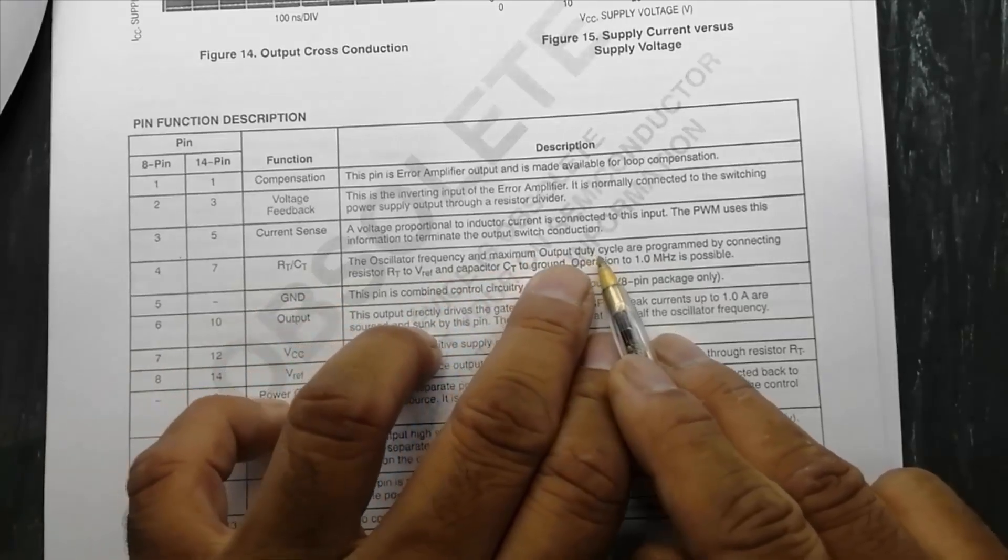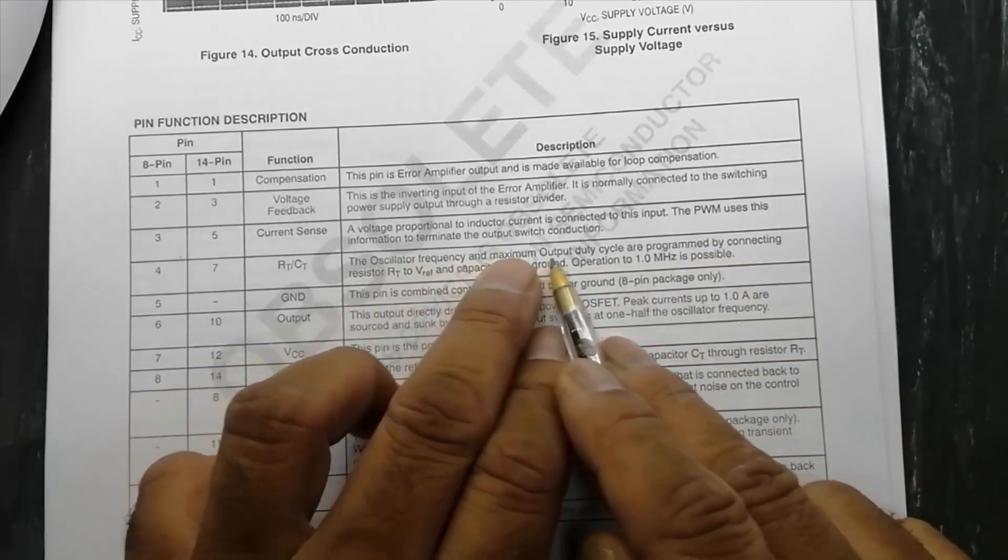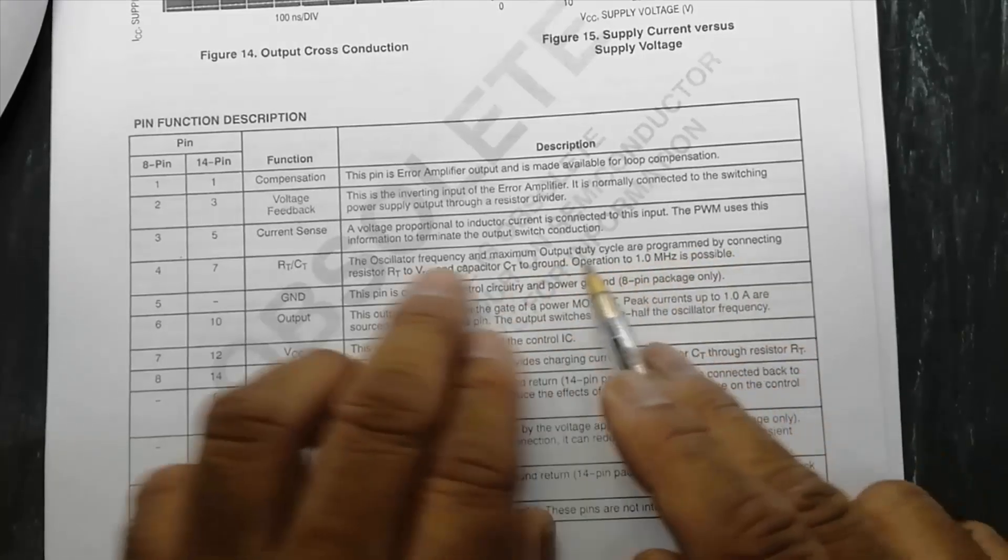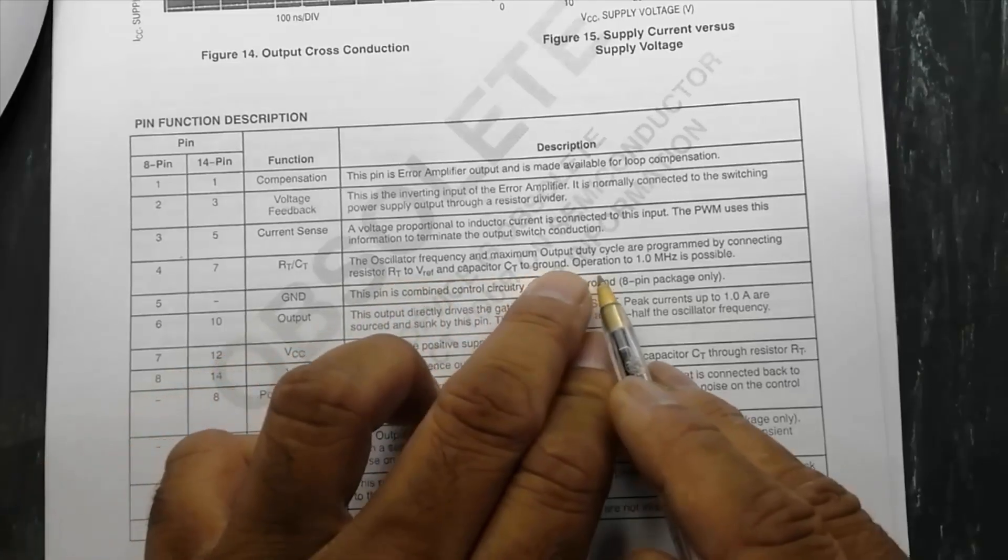RTCT is oscillator selection. Maximum output duty cycle are programmed. Oscillator frequency and maximum duty cycle are programmed by connecting resistor RT to V reference and CT to ground.